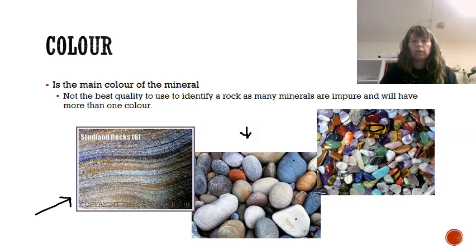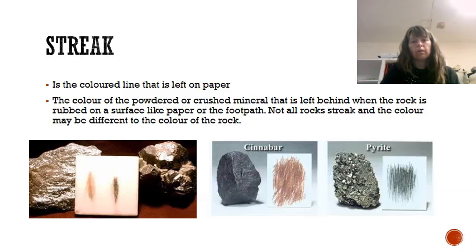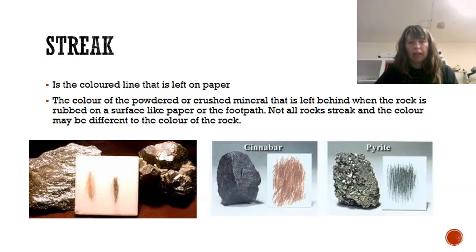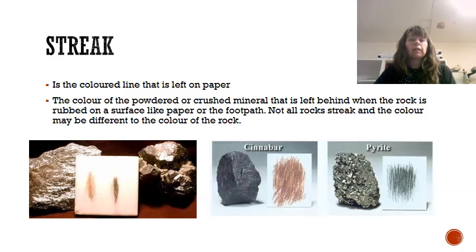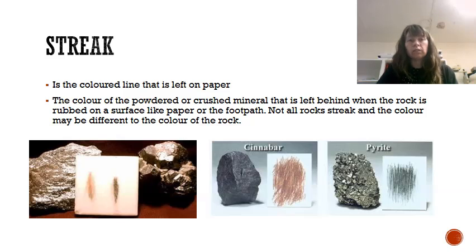Colour is not the best quality to identify a rock with, because things like sapphires could be red or blue — even one type of rock can come in different colours. The next characteristic is streak, which is a coloured line left on paper. Basically, we grab a rock and rub it on a piece of paper, and if it leaves a mark behind we say it has a streak. Streaks can be a different colour to the rock itself and are often used in pigments like ochres — the sort of colours used in cave paintings.